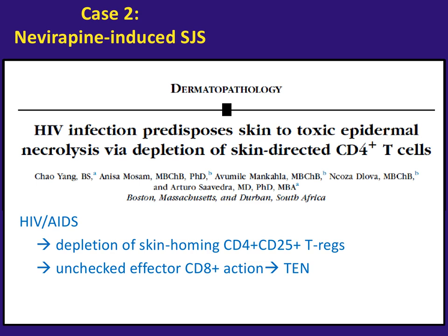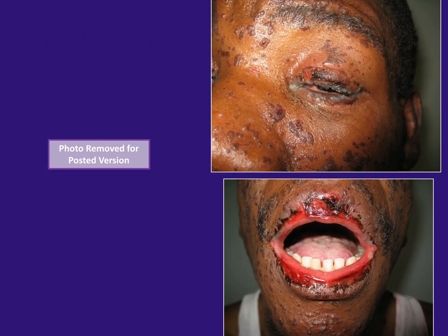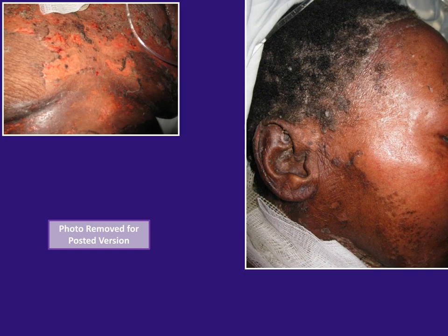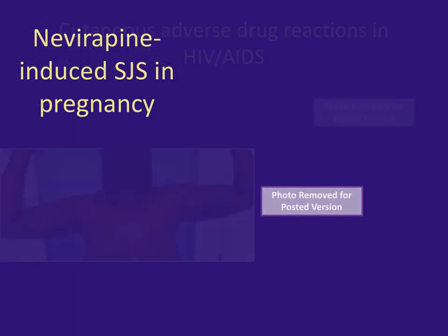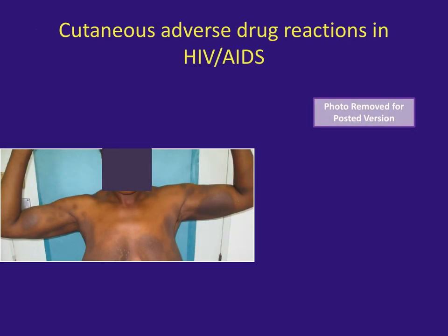We see TEN and SJS a lot in patients with low CD4 counts, often in Southern Africa from nevirapine, but also from sulfa drugs, other antiretrovirals, and other medicines like allopurinol and other antibiotics besides sulfa agents. These are all cases of SJS and TEN. Another nevirapine-induced case was in a pregnant woman when it was fairly standard to switch to nevirapine for pregnancy at the time. That's a quick tour of SJS and TEN.